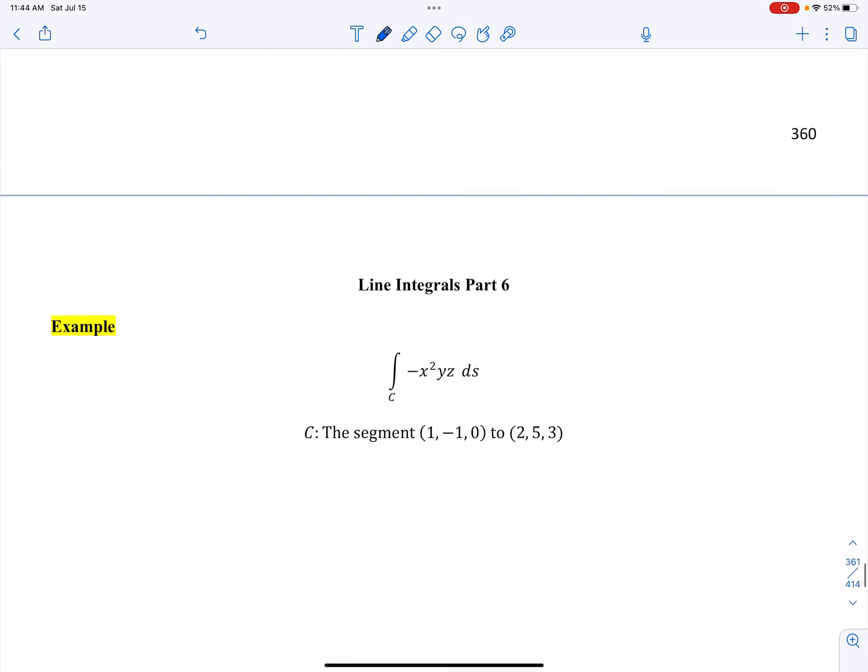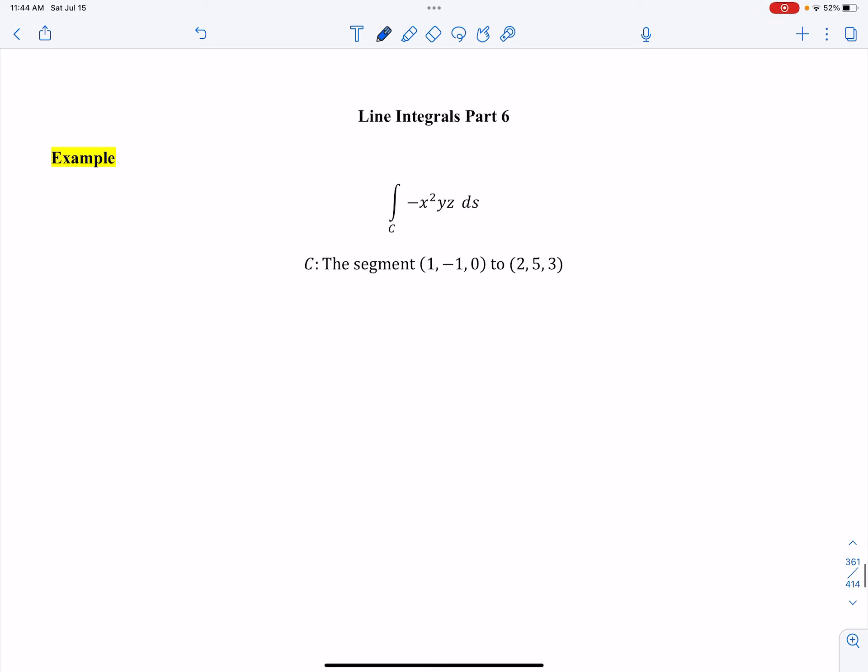So how we're going to do that is, first we have a segment, it's just a straight line. Let's define each one. x of t: if I look at x, it goes from 1 to 2, so it has a slope of 1, so it's going to be t. And then it started at 1.